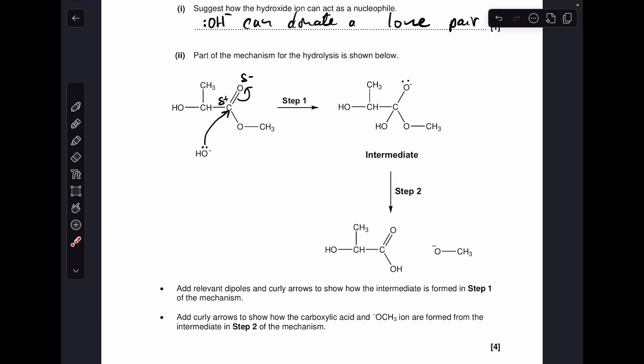And then for the second bullet point, we've got to add curly arrows to show how the carboxylic acid and this ion here is formed from that intermediate. So again, we're just looking at what's changed. So you can see that the double bond is reformed. So to do that, we're going to take the curly arrow from the, because I've drawn the lone pair on, I'm going to take it from there. I'm going to do that. Otherwise, you'd have to go from the minus sign.